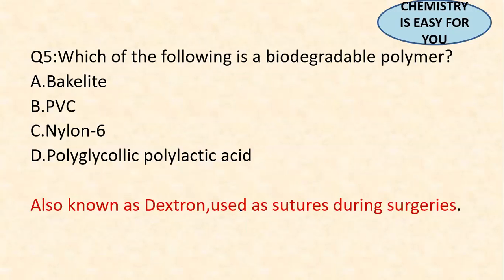The fifth question: which of the following is a biodegradable polymer? The answer is option D — polyglycolic-polylactic acid, also known as Dextron, used as sutures during surgery. A biodegradable polymer can be decomposed when discarded into the environment using biological organisms. Dextron or polyglycolic-polylactic acid gets decomposed rapidly and is used as sutures during surgeries.